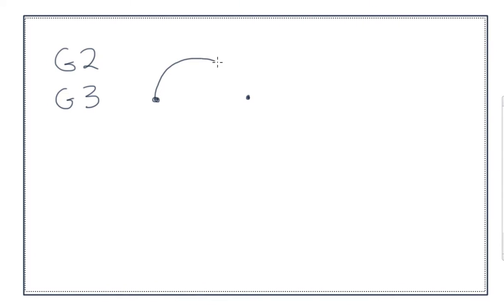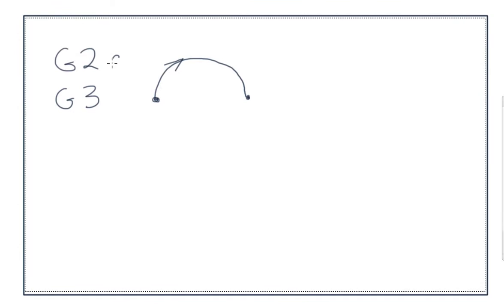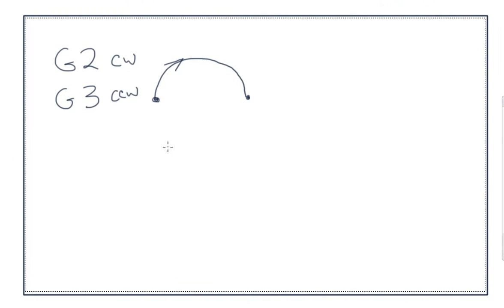We're going to talk about the last two commands in G-code that we briefly mentioned, and that's arc motion: G2 and G3. If you want to do a circle, semi-circle, or an arc of any shape, that's going to use G2 and G3. If you're going clockwise it's G2, and if you're going counterclockwise it's G3.